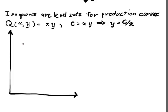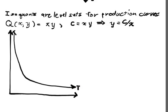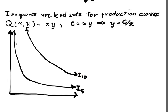Our isoquants are going to be the hyperbolic swoops at different levels. This would be the swoop corresponding to I₅, where c = 5, and this might be the swoop corresponding to I₁₀, where c = 10.